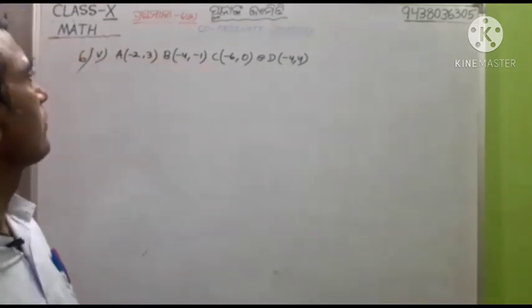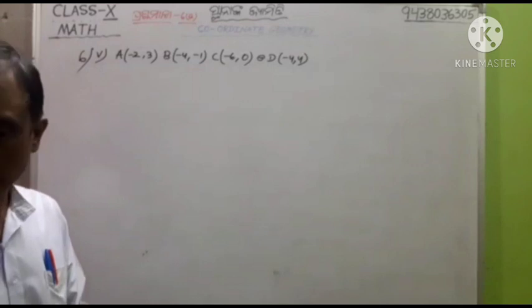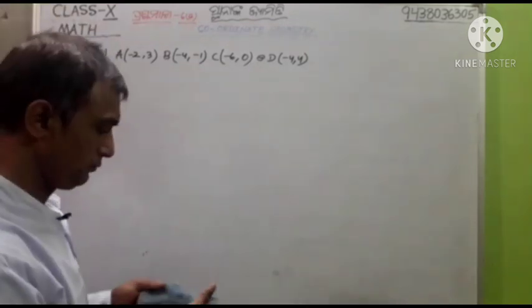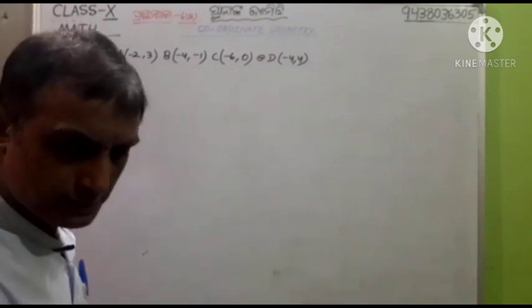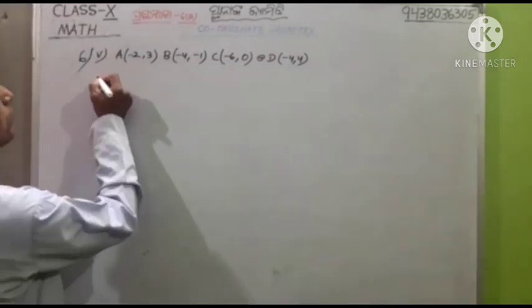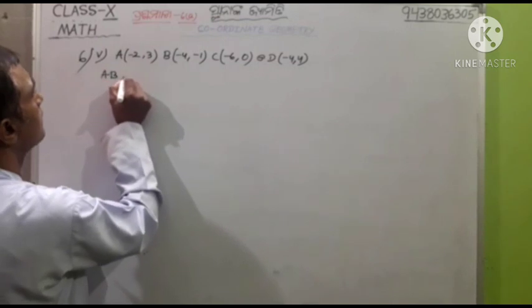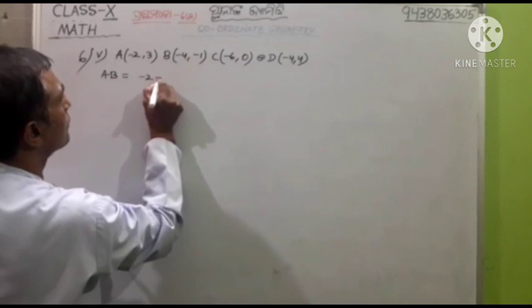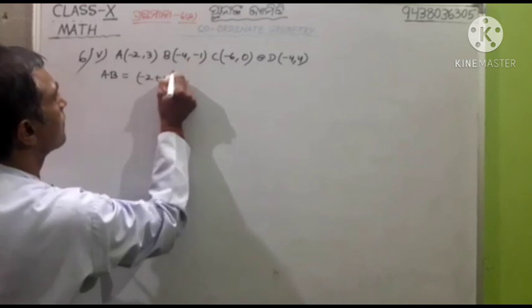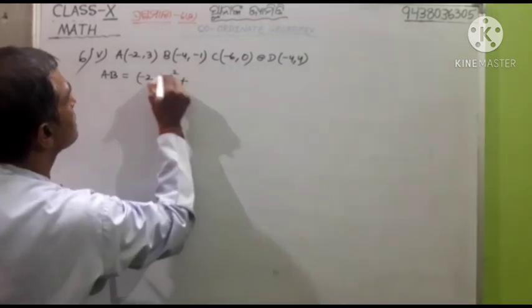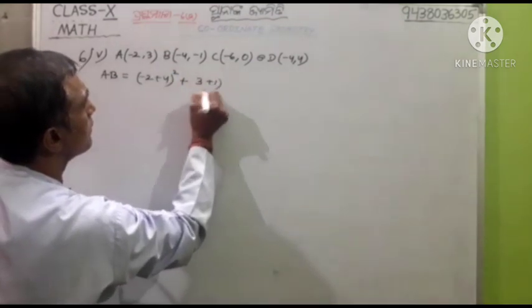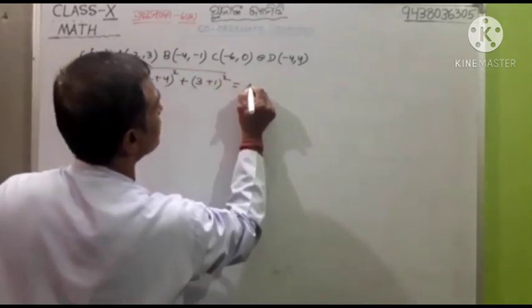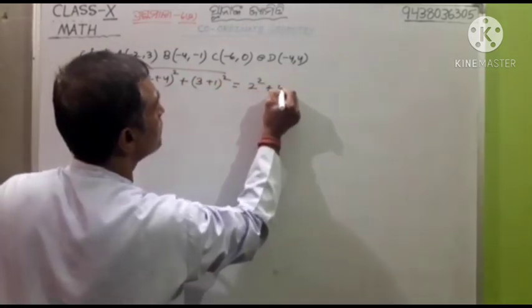We are including D: minus 4, minus 4 and minus 60. Minus 4 and 4. So let's see the picture here. Let's go outside. A, B is outside. Then minus 2 minus minus 4 is plus 4, plus square. Plus 3 plus 1 plus square. The root over is equal to 2 square plus 4 square.